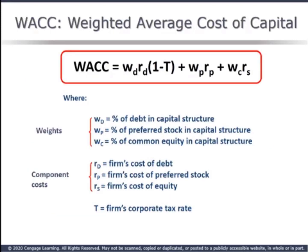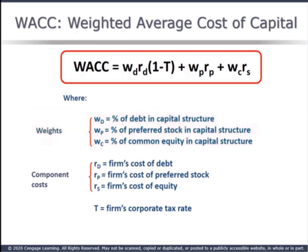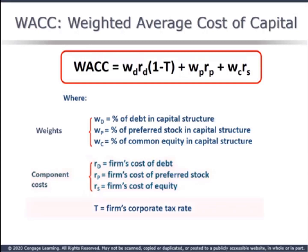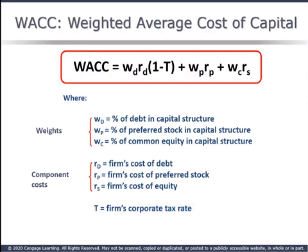This is the weighted average cost of capital formula. The W factors are the weights — the percentage of each component that make up the funding of the firm. The R components are the cost of each type of capital: the cost of debt, the cost of preferred, etc. T is the firm's corporate tax rate. In this chapter, we'll look at how we arrive at each variable in this equation.